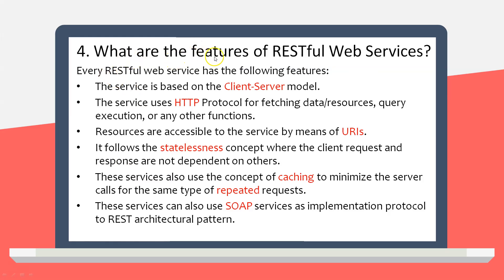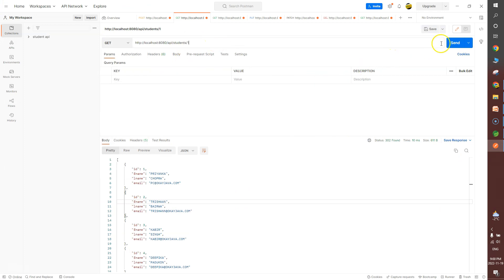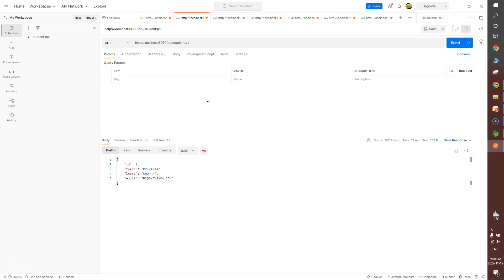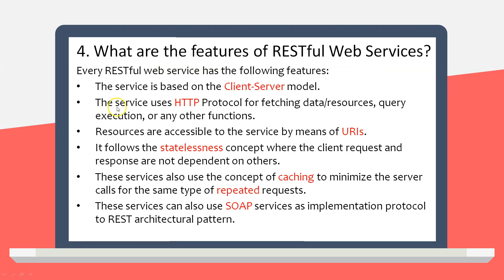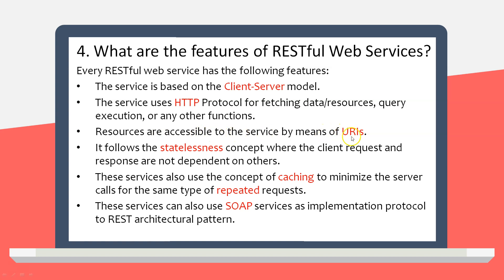Next question: what are the features of RESTful web services? The first feature is that the service is based on the client-server model — localhost is the server and Postman is the client. REST services use HTTP protocol for fetching data, resources, query execution, or any other functions, including GET, PUT, PATCH, and DELETE. These resources are accessible by means of URIs, which are your endpoints.